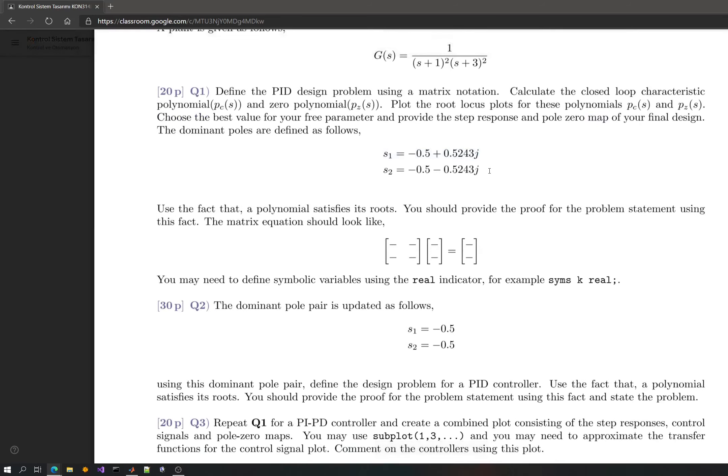The dominant poles are given directly. Different from the method that we use in our course is that you will not use the coefficient algebraic methods. You have to use the characteristic polynomial here. Every polynomial satisfies its roots. This sentence is very crucial. If you do not use this method, then don't expect full grade from this question.